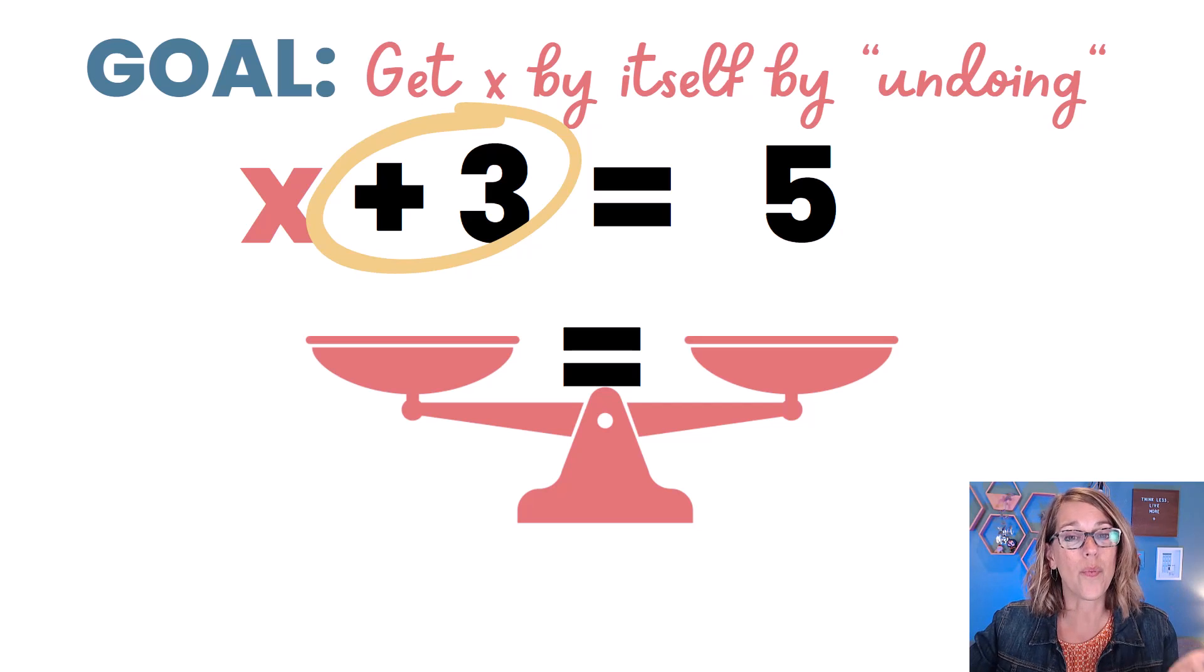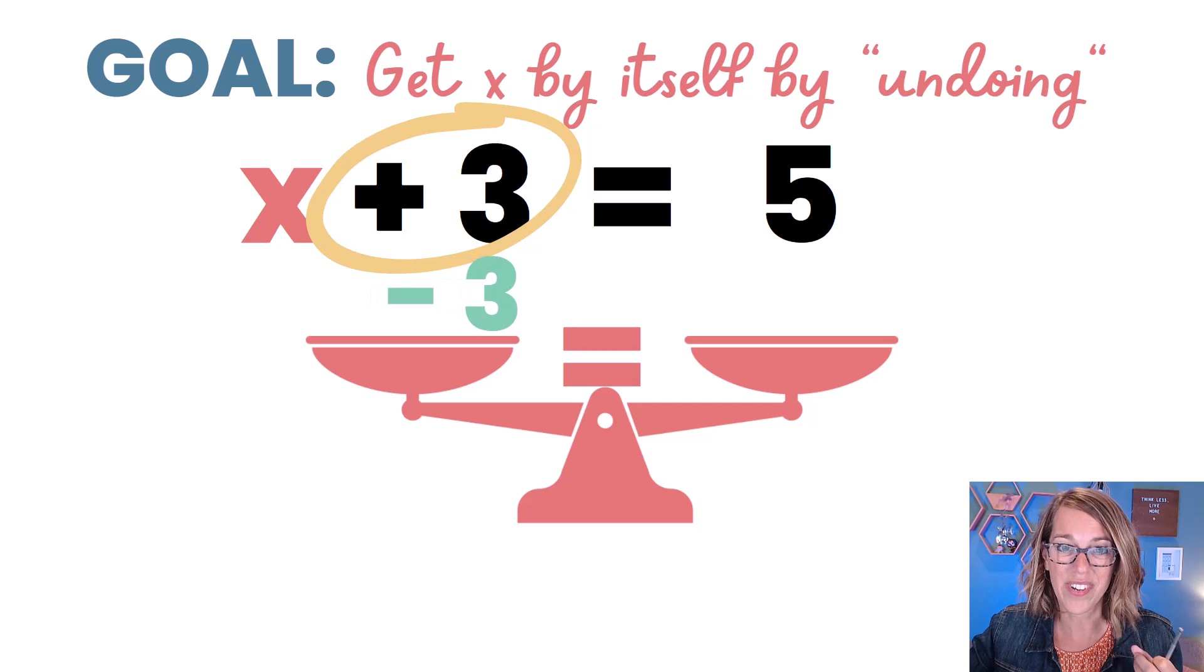Whatever I need to undo on one side, like subtracting that 3, I need to also do on the other side. So I'm also going to subtract a 3 on that right-hand side.